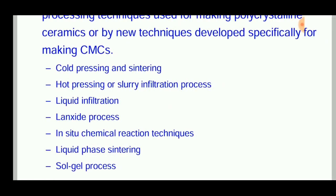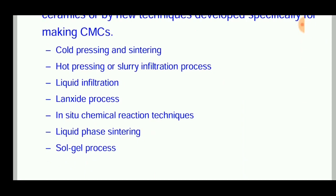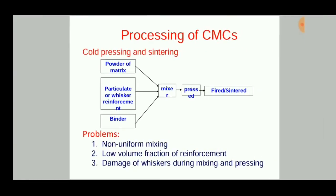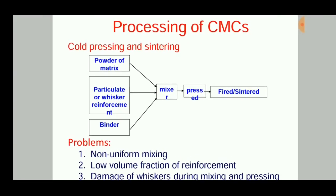Some of the techniques used for the processing or production of ceramic matrix composites are: cold pressing and sintering, hot pressing, slurry infiltration process, liquid infiltration, sol-gel process, in situ chemical reactions, liquid phase sintering, and solder process. First we will discuss cold pressing and sintering.